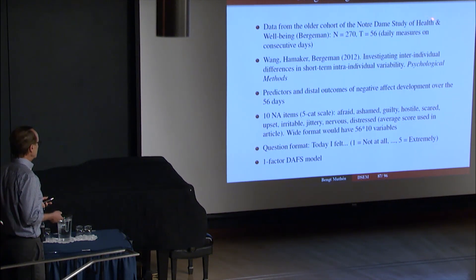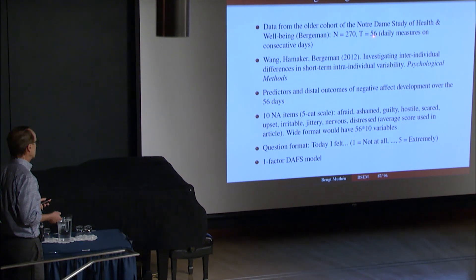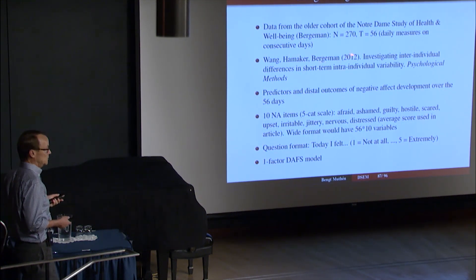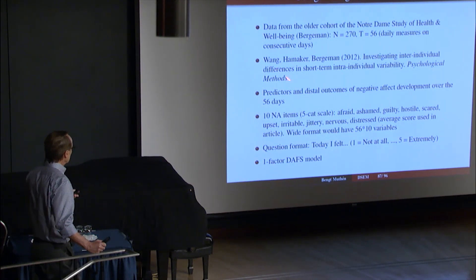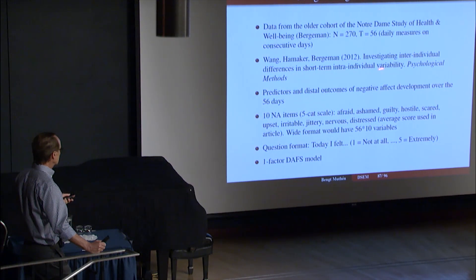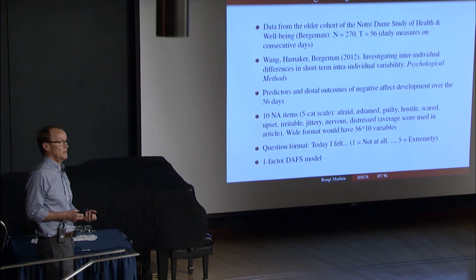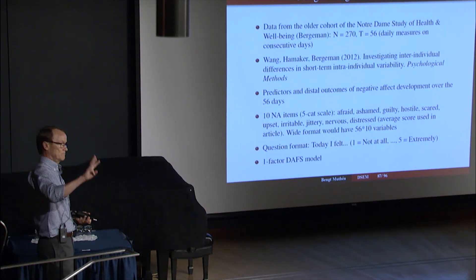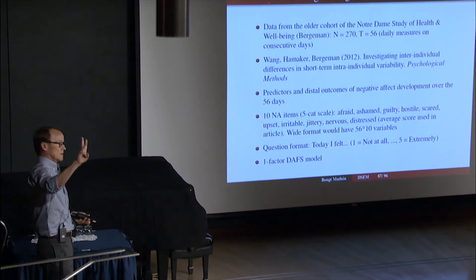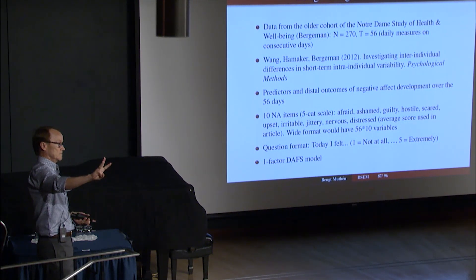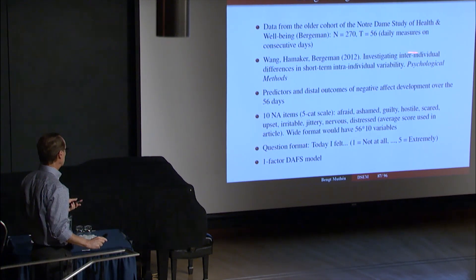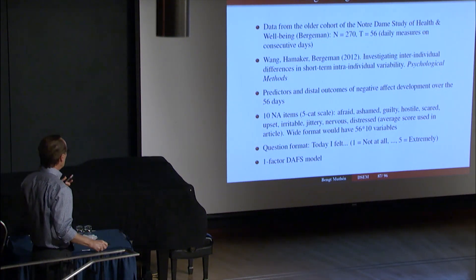The data come from a Notre Dame study by Cindy Bergman, where you have 270 people and 56 time points, daily measures on consecutive days. And that was described in an article in Psychological Methods by Wang and somebody called Hamacher Bergman and Bergman 2012. So that article was a real inspiration to me because it really stressed what the important parameters are that we should let vary across subjects. The primary three: intercept, phi, and variance. Those are the three important ones. That trio, they had that done there.